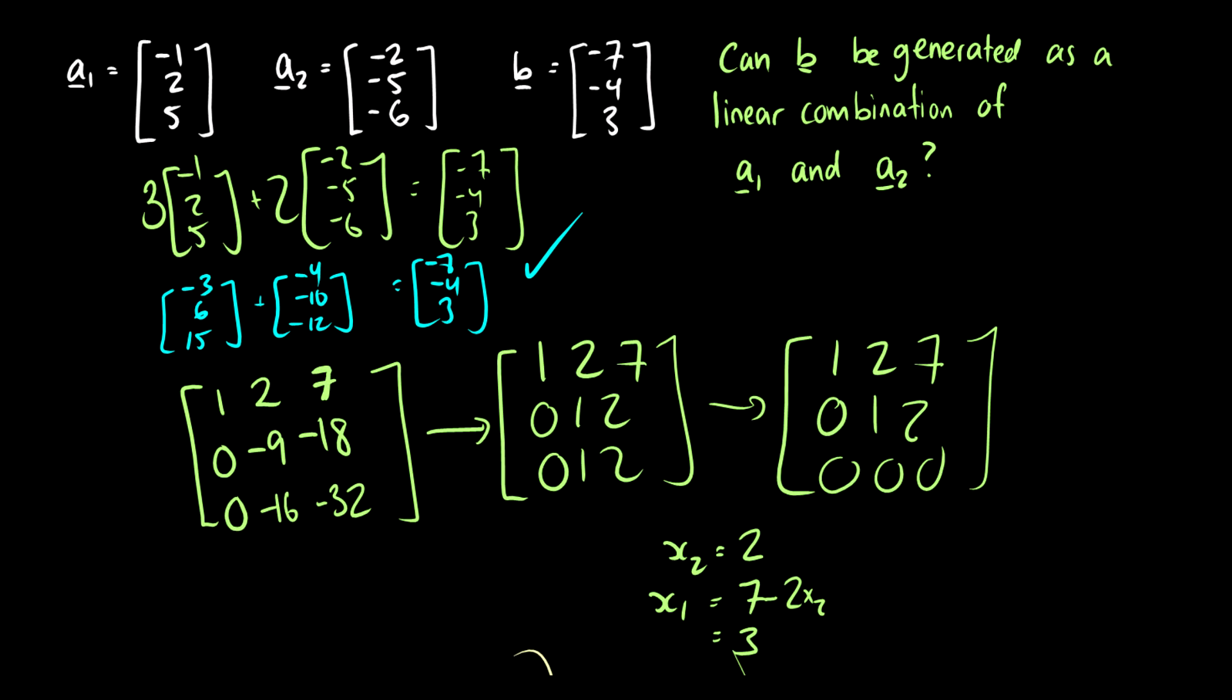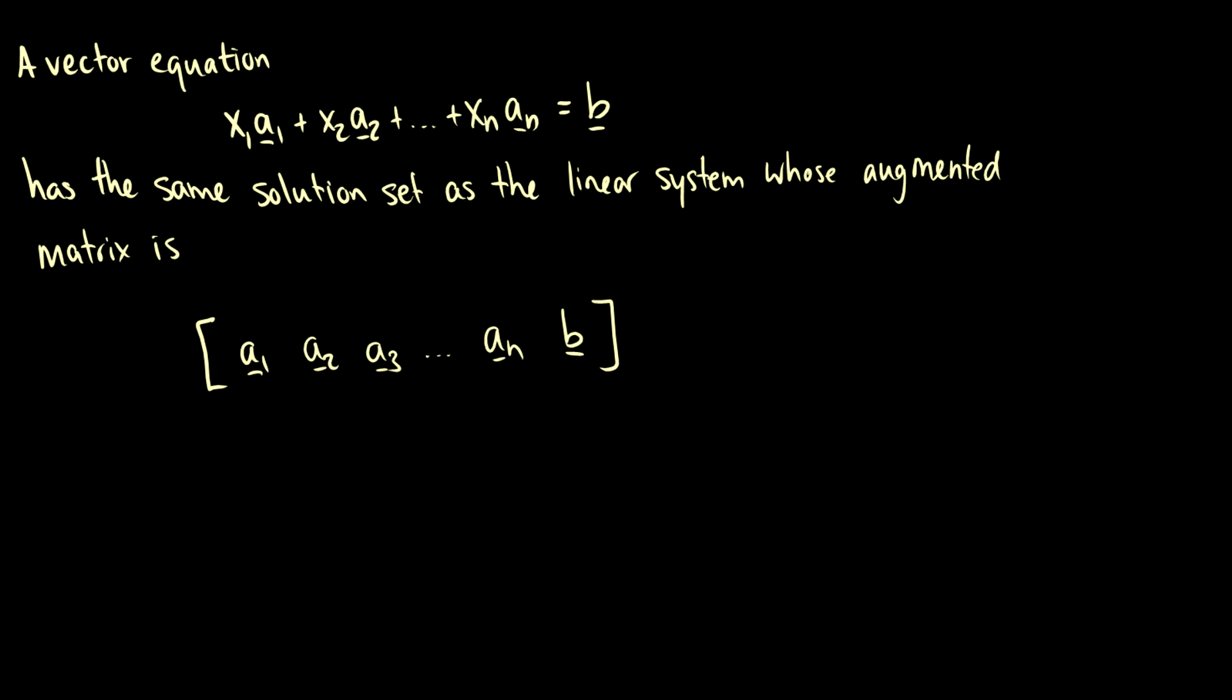So if we only have vectors a1 and a2 in our system, we can make vector b. So here's a vector equation: x1a1 plus x2a2 all the way up to xnan equals b. This has the same solution set as the linear system whose augmented matrix is a1 through an and b. So this is the exact same thing as we did in the previous one. We said is a1, a1 plus a2, can this linear combination generate b?